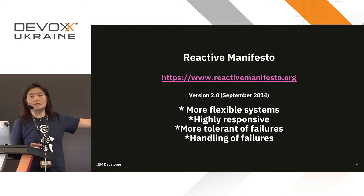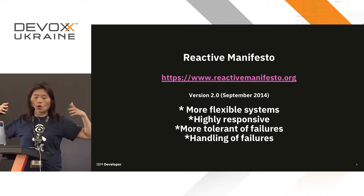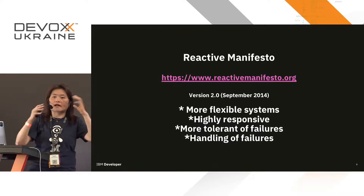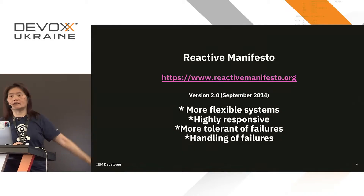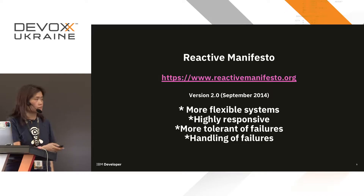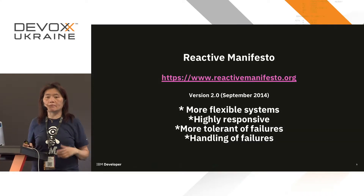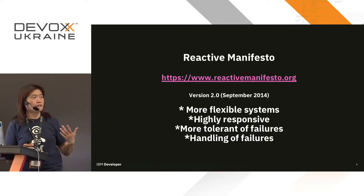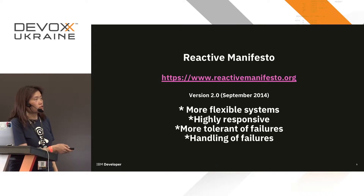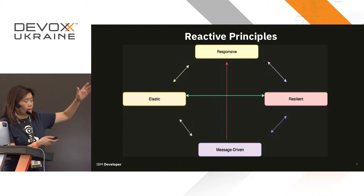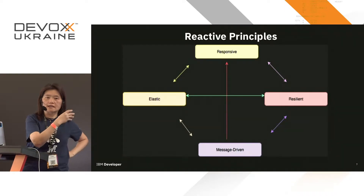To summarize, we want systems that are highly flexible, very responsive, with disparate components that aren't tightly coupled — yet synchronized in a coherent fashion. The system has to be highly responsive and very tolerant of failures, with failures handled properly. The Reactive Manifesto was actually led by Lightbend, Martin Odersky's company — the Scala inventor — who also invented Akka. They came together and defined the manifesto based on four principles.